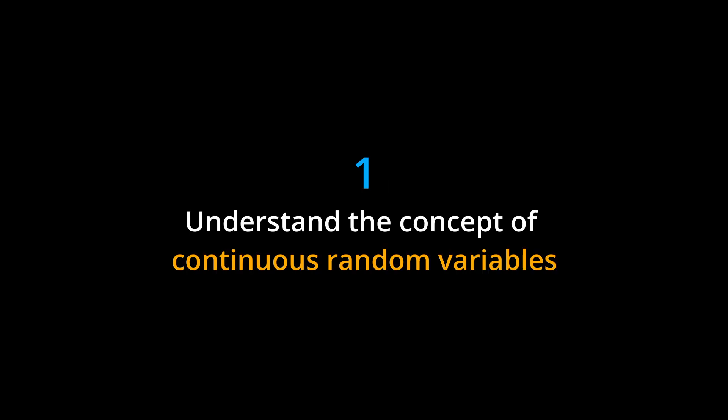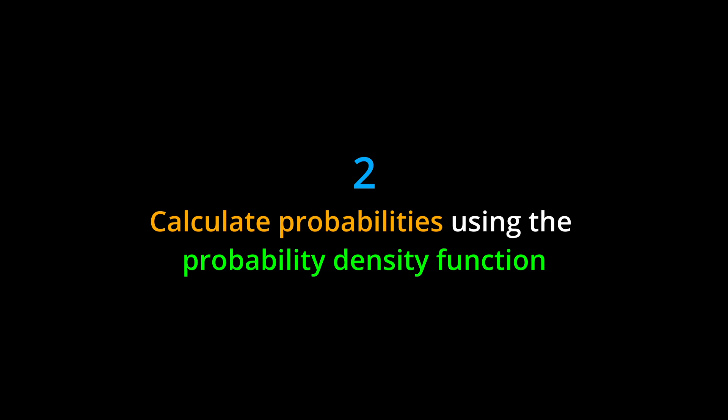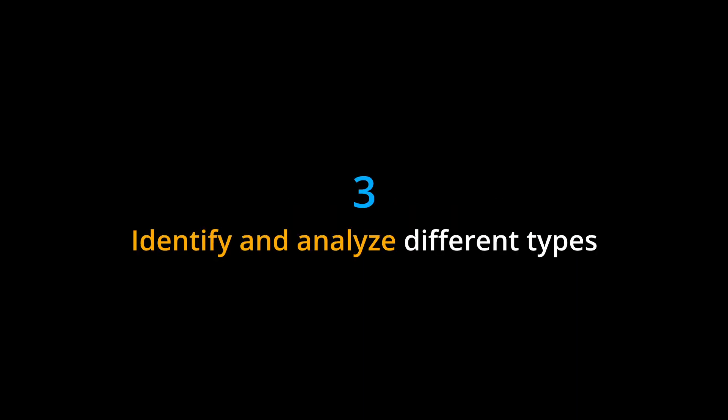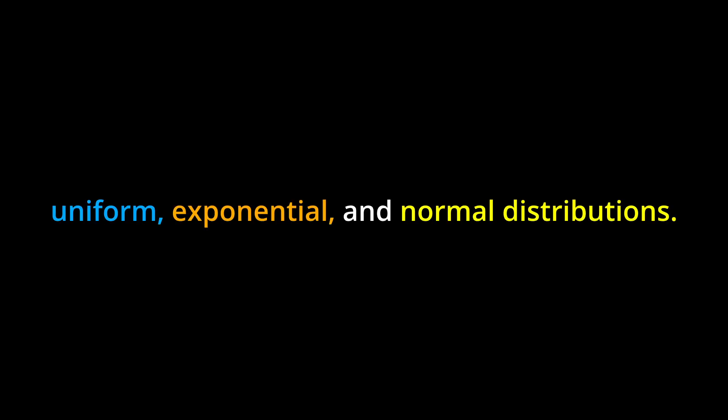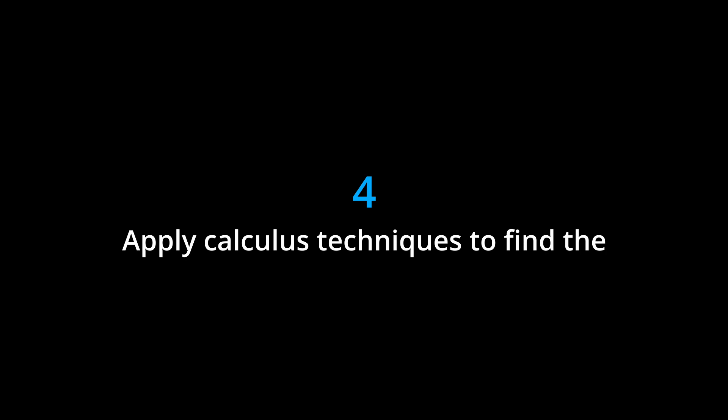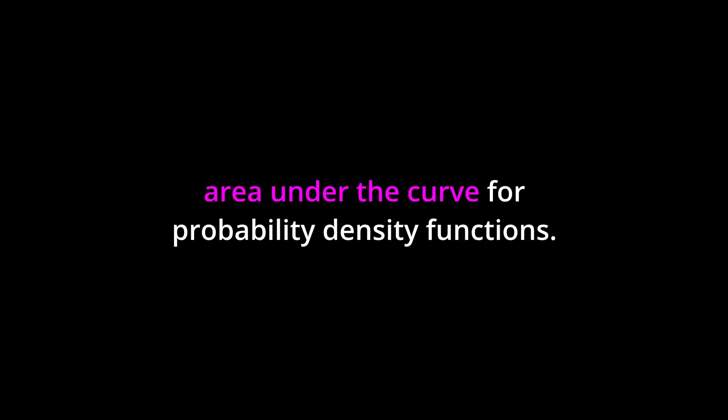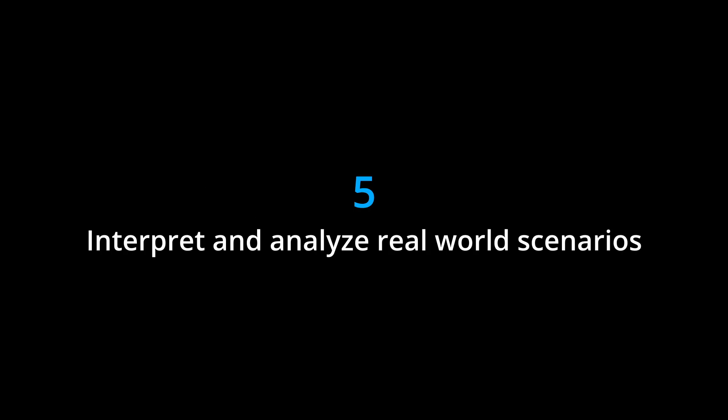Learning Objectives. By the end of this chapter, you should be able to: 1. Understand the concept of continuous random variables and their applications. 2. Calculate probabilities using the probability density function and cumulative distribution function. 3. Identify and analyze different types of continuous probability distributions, such as the uniform, exponential, and normal distributions. 4. Apply calculus techniques to find the area under the curve for probability density functions. 5. Interpret and analyze real-world scenarios using continuous random variables and probability distributions.